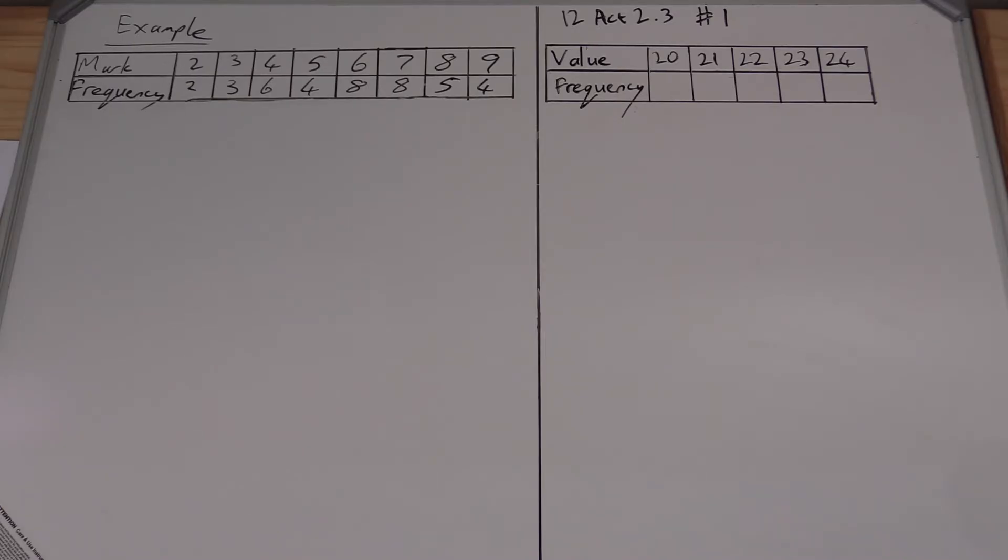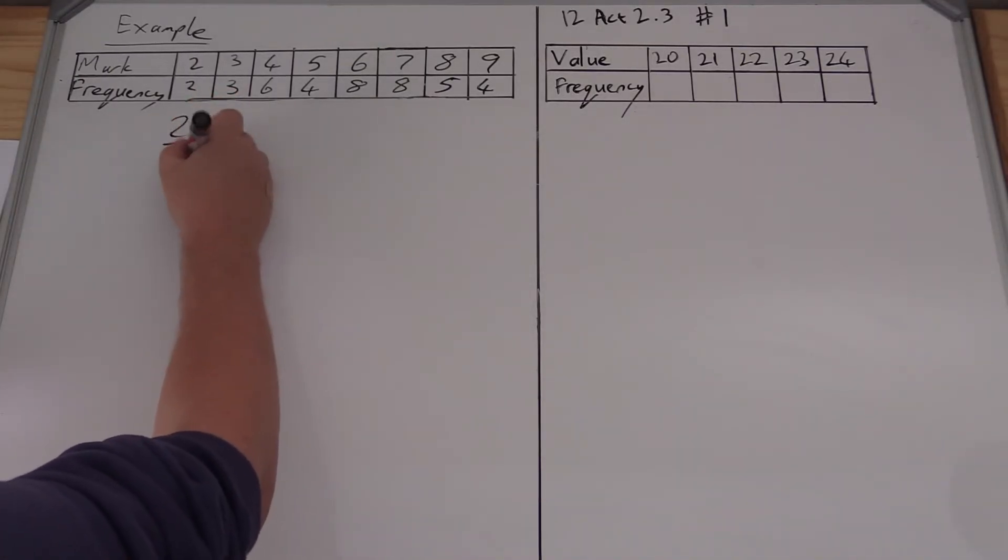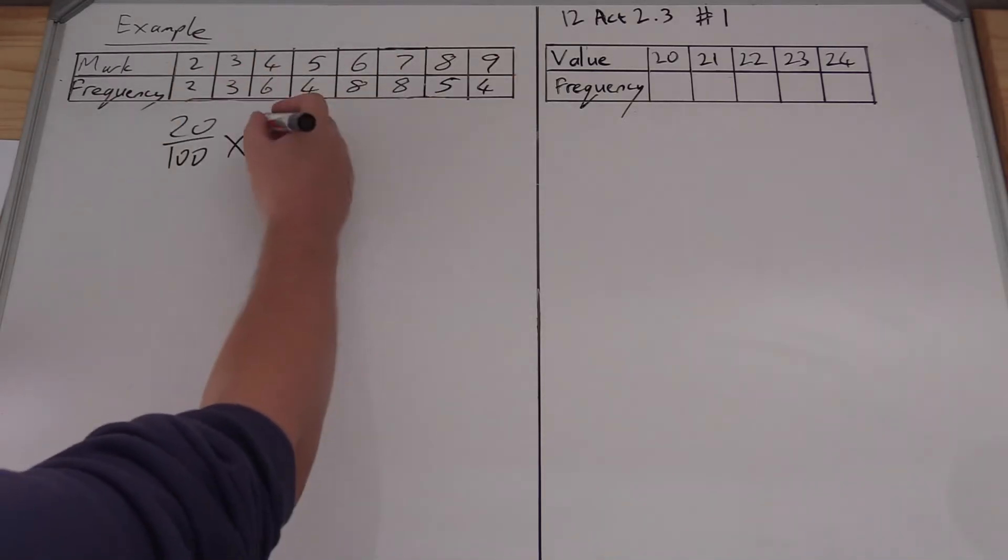The easiest thing to do here is to take a look at the amount of data that I have. This all adds up to 40, so I have 40 points of data here. What I need to do is find out what the 20 over 100 times by 40 over 1 is, to find out which position I will be sitting at. That comes to 8.